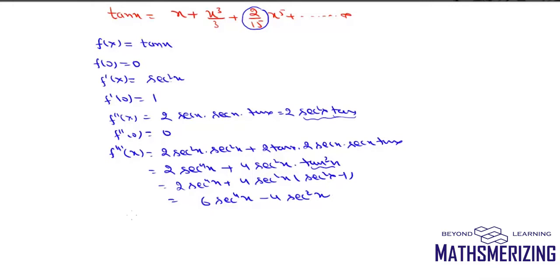So that is the third derivative. Putting x = 0, f'''(0) = 6 − 4 = 2.